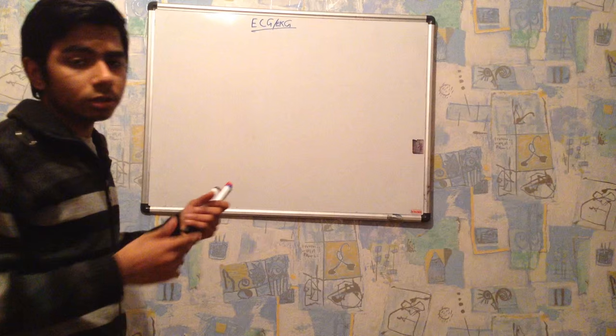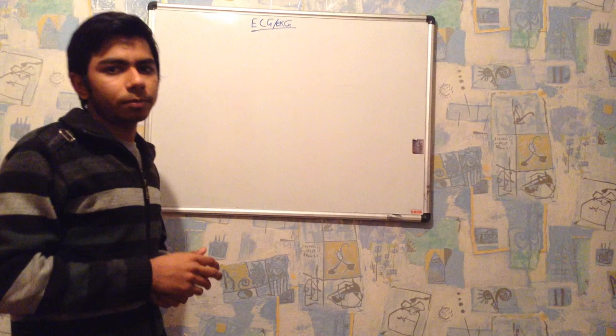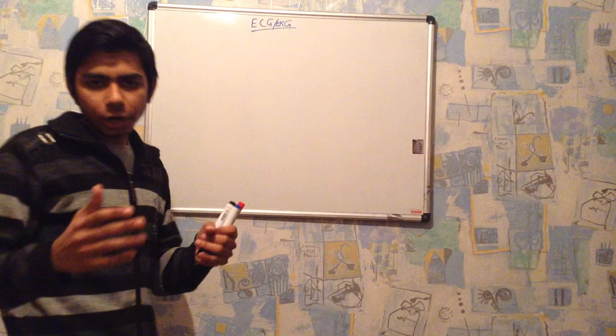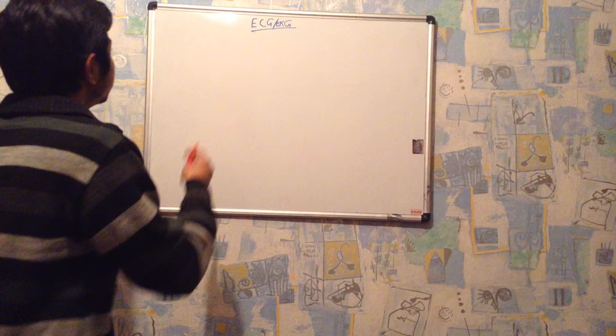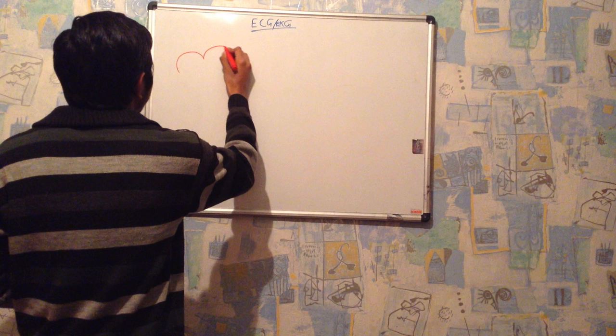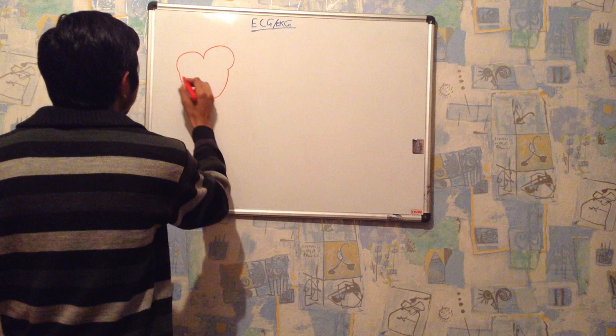Before going into detail of the ECG, first we should discuss about action potential in the cardiomyocyte, or how action potential is moving from one cardiomyocyte to another. So here I am drawing a heart — let's suppose this is our heart.